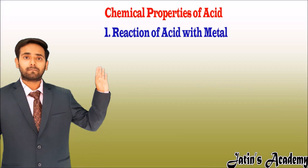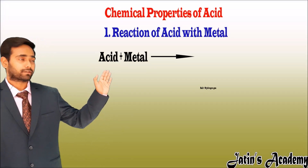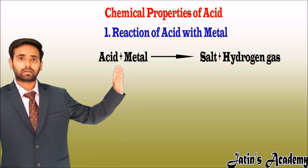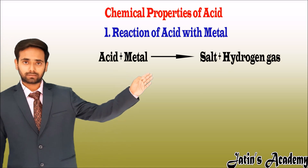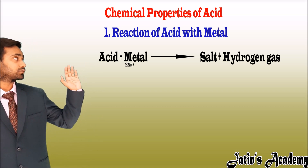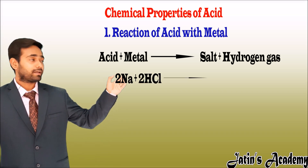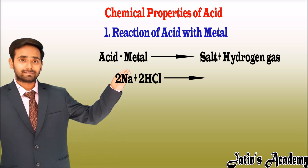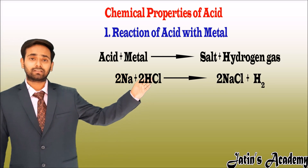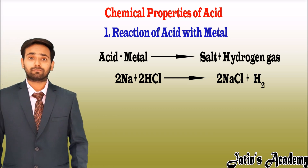When acid reacts with metal, it gives a metallic salt and hydrogen gas. For example, when sodium reacts with HCl, it gives NaCl (sodium chloride) and hydrogen gas. This is also called a displacement reaction.